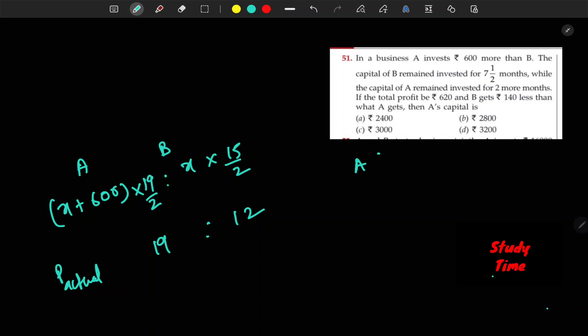So A and B total profit, how much is it? 620. And A and B total profit, here we go. So what will happen? First plus and divide, 620 plus 140.